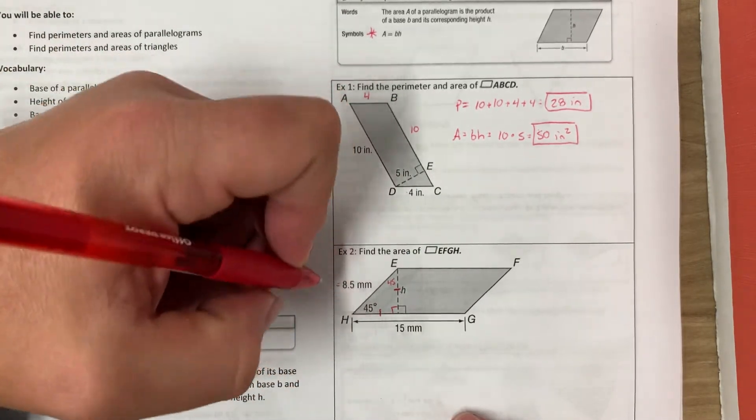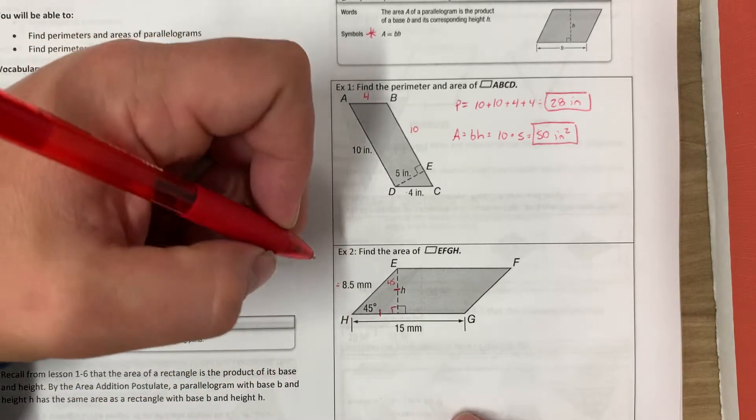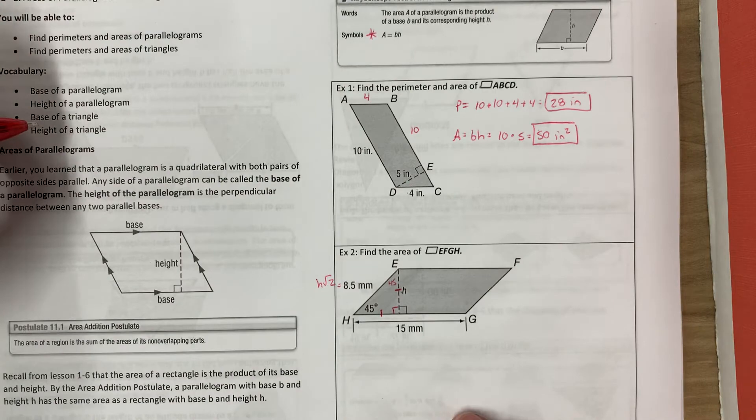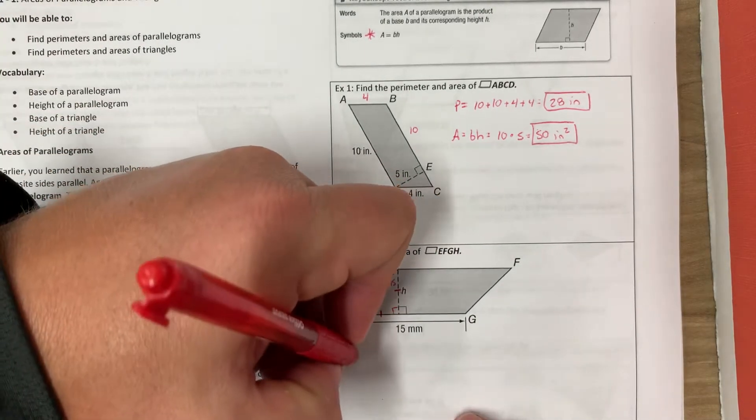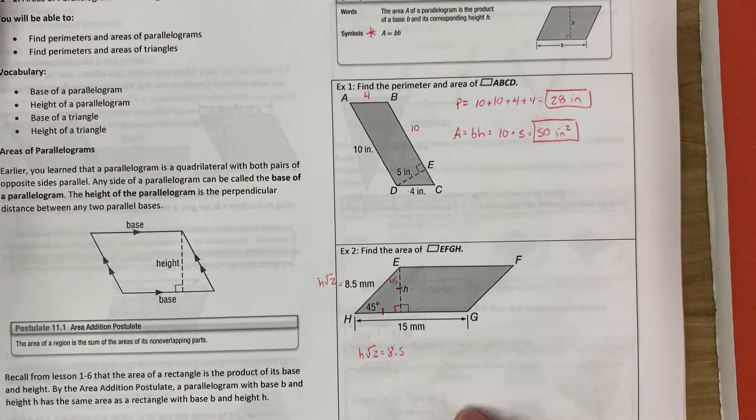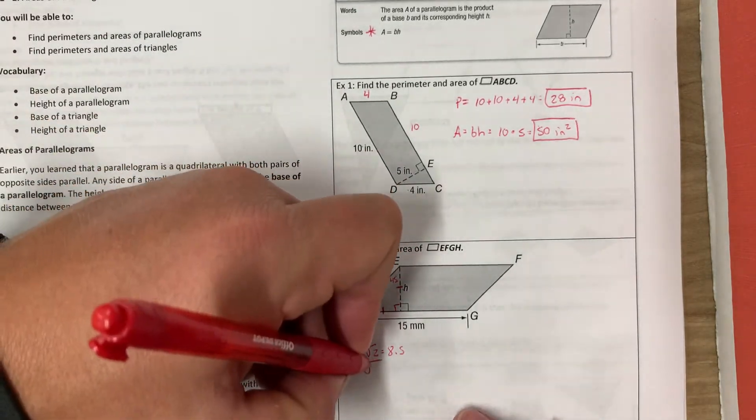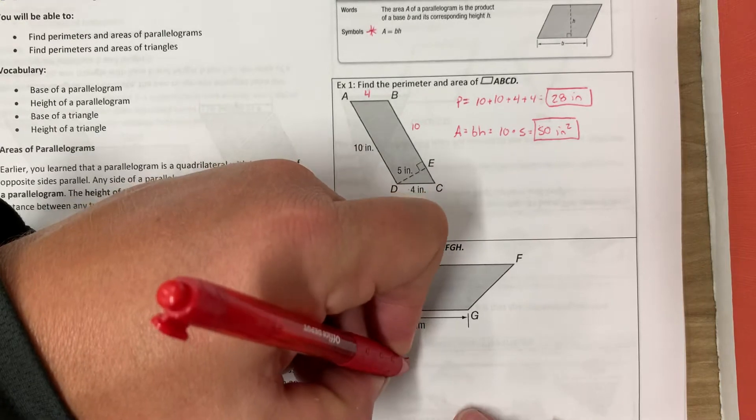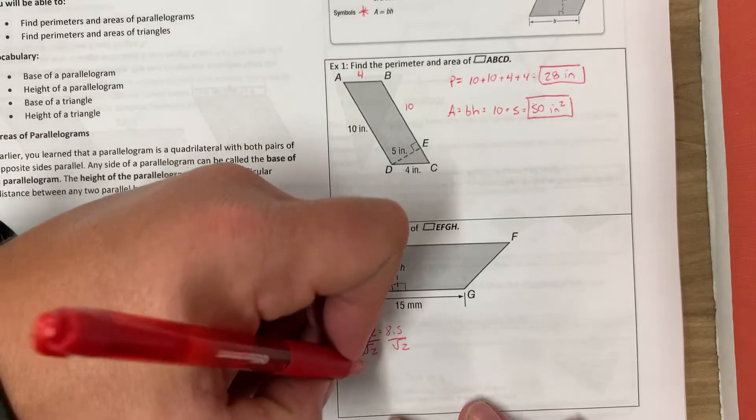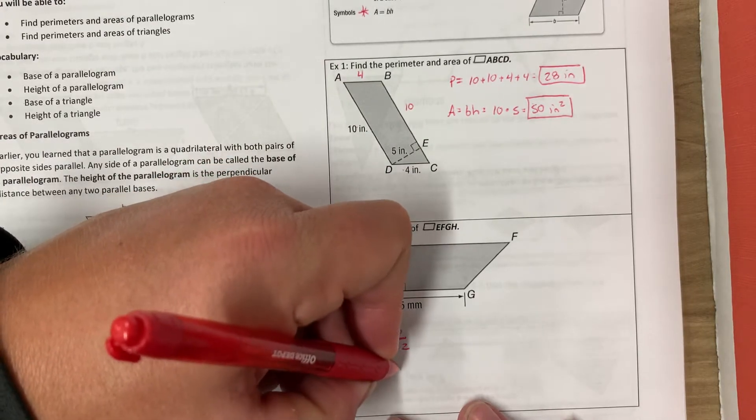It also makes our hypotenuse, if we recall our formula, H square root 2 for the hypotenuse in our special right triangles. So H square root 2 equals 8.5, and now we've got to solve for H. So we divide by the square root of 2, which cancels those out. 8.5 divided by the square root of 2 in your calculator, you'll get H equals 6 millimeters.